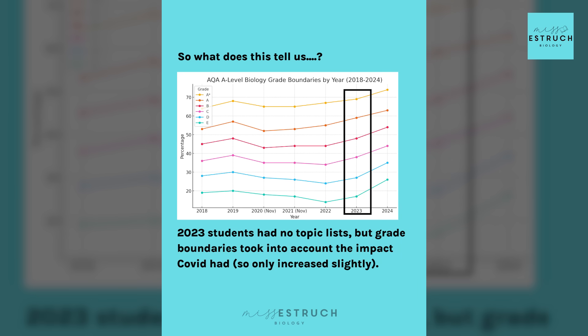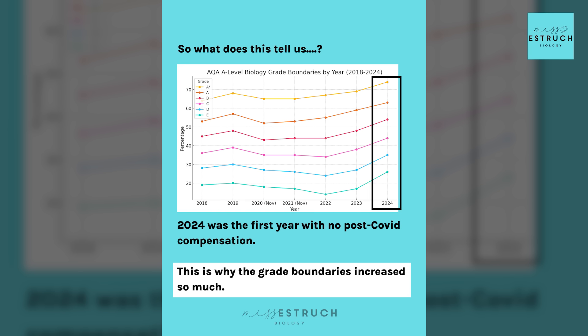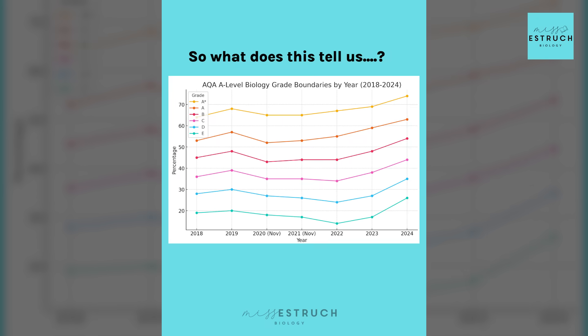In 2023 there were no topic lists, but students were told grade boundaries would still account for COVID's impact on their learning and skill development. So boundaries didn't rise as much as they typically would. Then in 2024, the first year post-COVID with no exemptions, no topic lists, and no grade boundary adjustments for disruption — it was four years post-COVID, these students hadn't had their GCSEs or A-levels impacted. This is why it felt like such a big leap. But if you ignore the COVID years and look at the pattern from 2017, 2018, 2019 through to 2024, you'd have expected a gradual increase that would lead to exactly where we ended up in 2024.